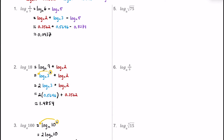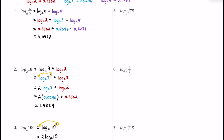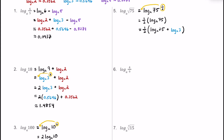For number 5, we have another square root radical. Using the same strategy, we rewrite it in exponential form, then use the power rule to bring the 1 half in front, giving us 1 half times log base a of 75. Using the product property, we break 75 into 25 times 3, writing this as 1 half times the quantity of log base a of 25 plus log base a of 3. Since 25 is a perfect square, we rewrite it as 5 squared, giving us log base a of 5 squared plus log base a of 3.